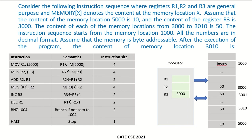Let's solve this example — this question came in the GATE exam of 2021. Consider the following instruction sequence. R1, R2, and R3 are general purpose registers, and M[x] denotes the content at memory location x. So if they write M[x], it means the contents of memory location x.